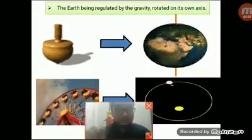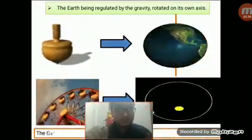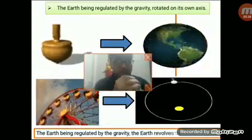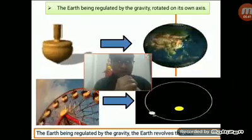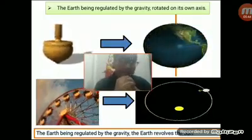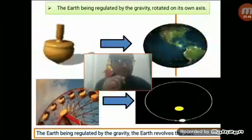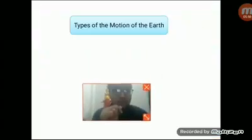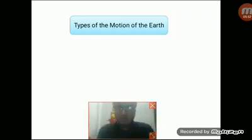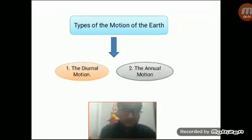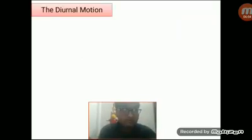That's all about the motion of the earth. The earth, being regulated by gravity, revolves around the sun. Now, I am going to talk about the types of motion of the earth. Basically, there are two types. One is called the diurnal motion and another is called the annual motion. At first, I am going to discuss about the diurnal motion.